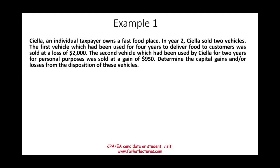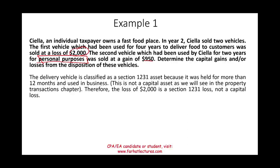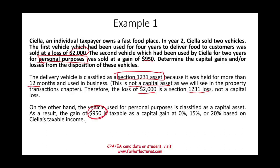Example one: Siela owns a fast food restaurant and sold two vehicles. The first was a delivery vehicle used in the business for four years, sold at a $2,000 loss. Because it was held more than 12 months and used in a business, it is a Section 1231 asset — so the $2,000 loss is a Section 1231 loss, not a capital loss, and is treated differently. The second vehicle was used for personal purposes and sold at a gain. That gain is taxable as a long-term capital gain, potentially subject to 0%, 15%, or 20% depending on the individual's taxable income.